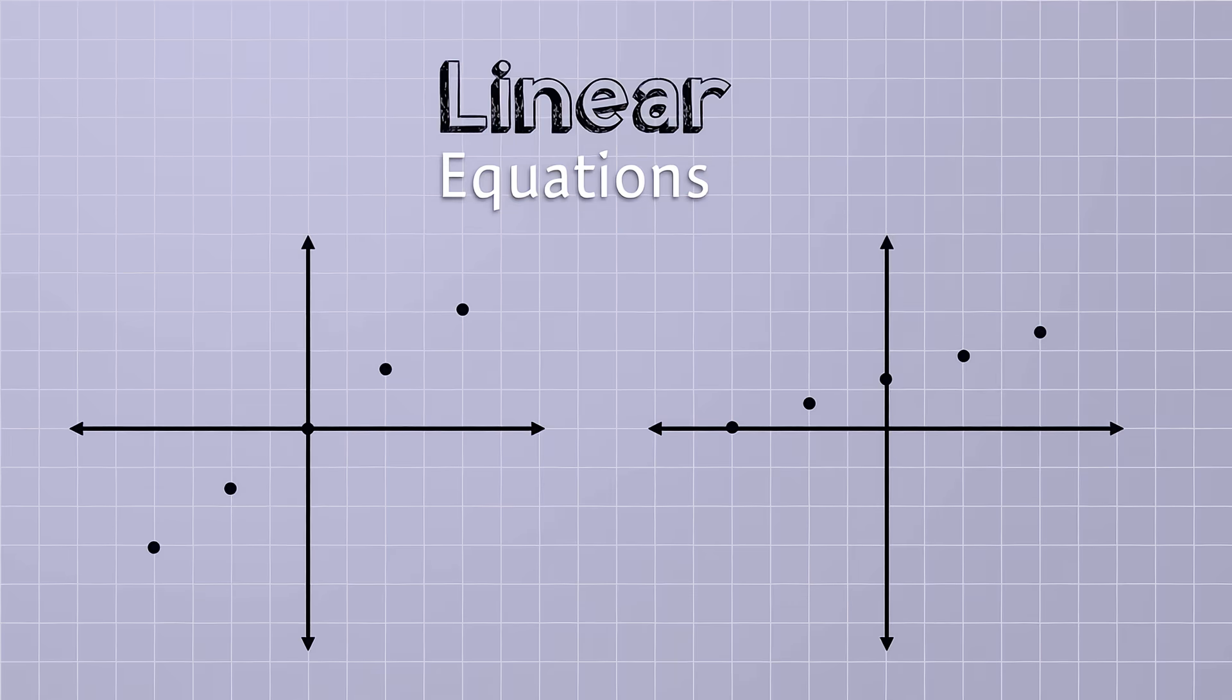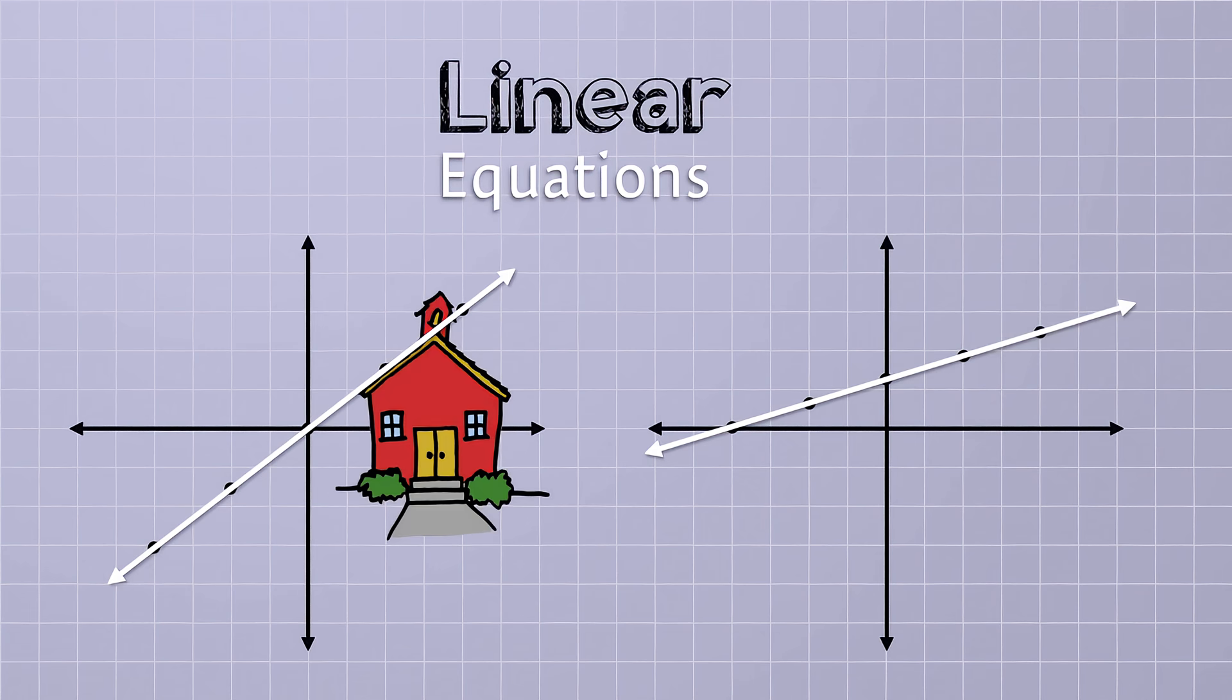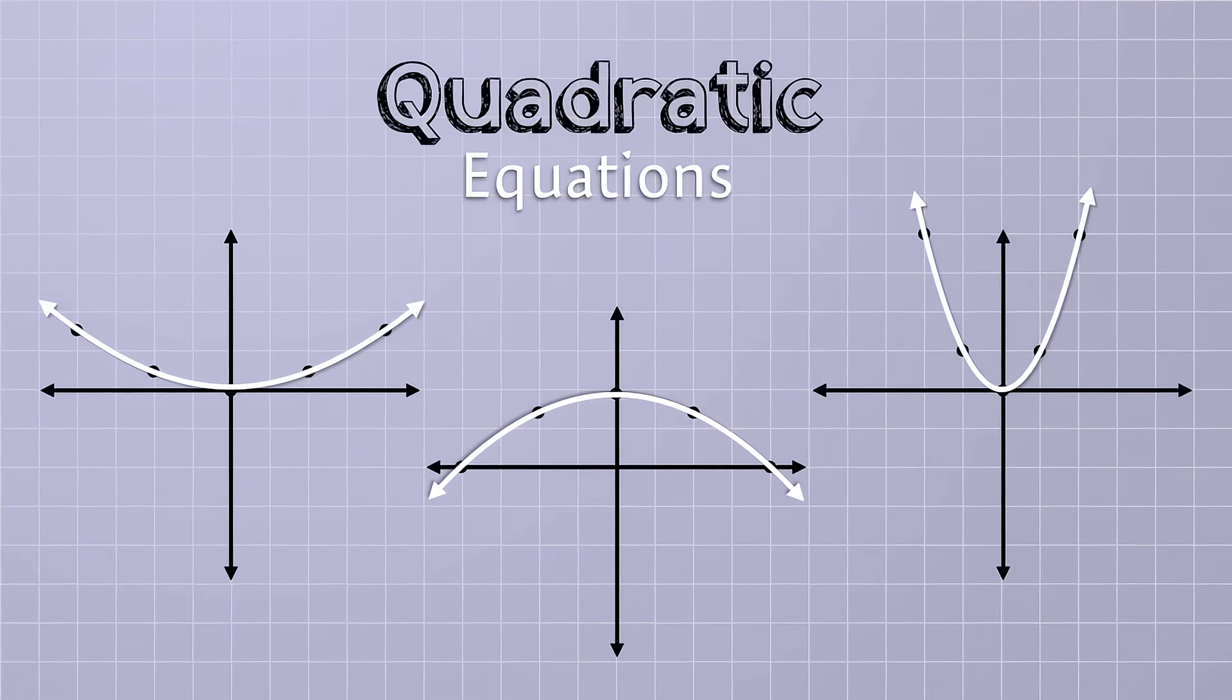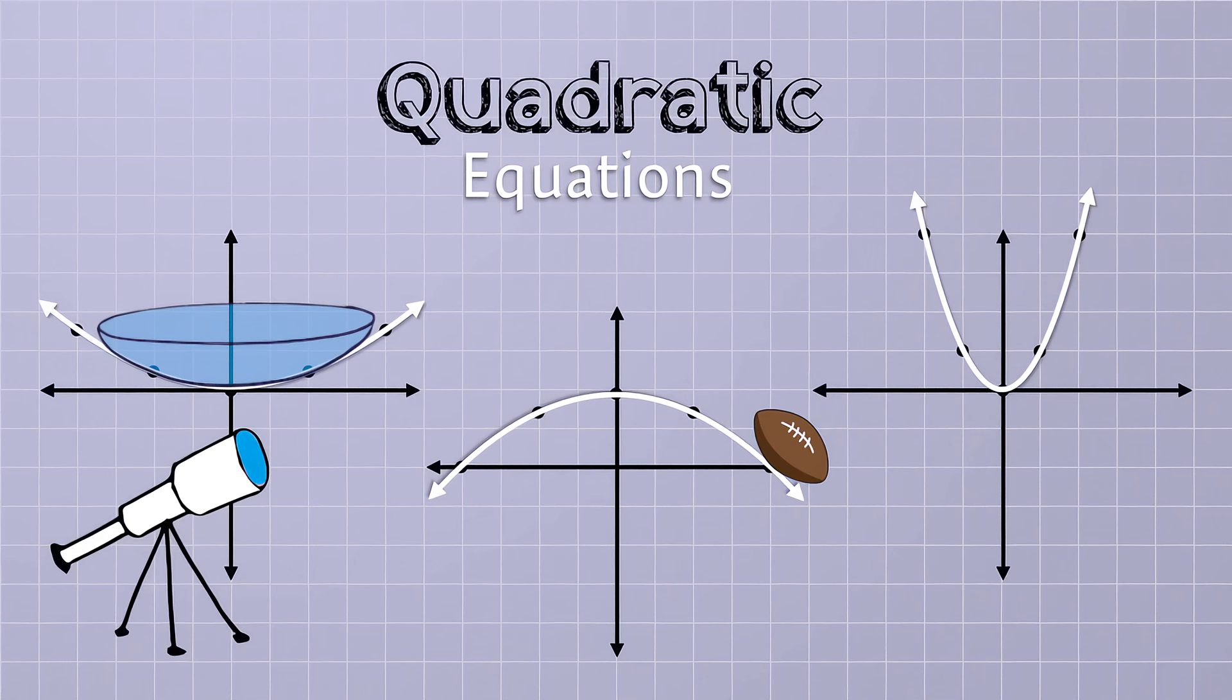For example, there's a whole class of equations in algebra called linear equations because they form straight lines when you graph them. Those sorts of equations could help you describe the slope of a roof or tell you how long it will take to get somewhere. Another class of algebraic equations, called quadratic equations, can be used to design telescope lenses or describe how a ball flies through the air or predict the growth of a population. So algebra is used all the time in fields like science, engineering, economics, and computer programming.